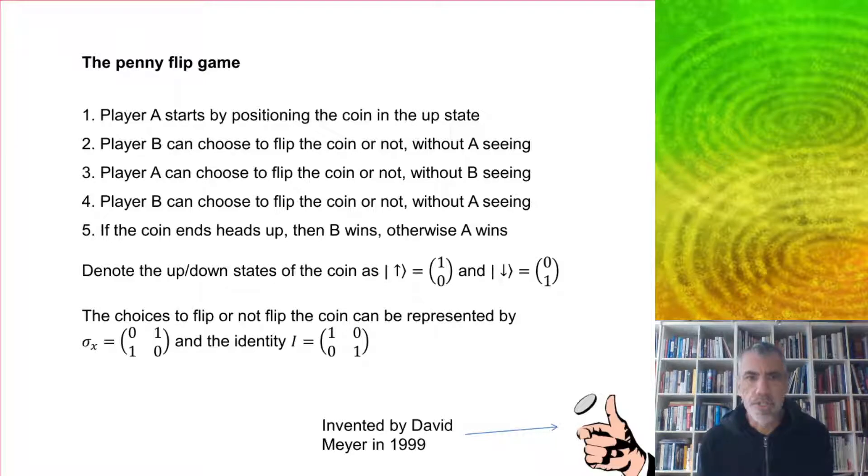We'll denote the up-down states of the coin as usual - up will be |1⟩ = (1, 0), down will be |0⟩ = (0, 1). And the choices to flip or not flip the coin can be represented by the NOT gate, which just flips, and the identity which keeps it the same.